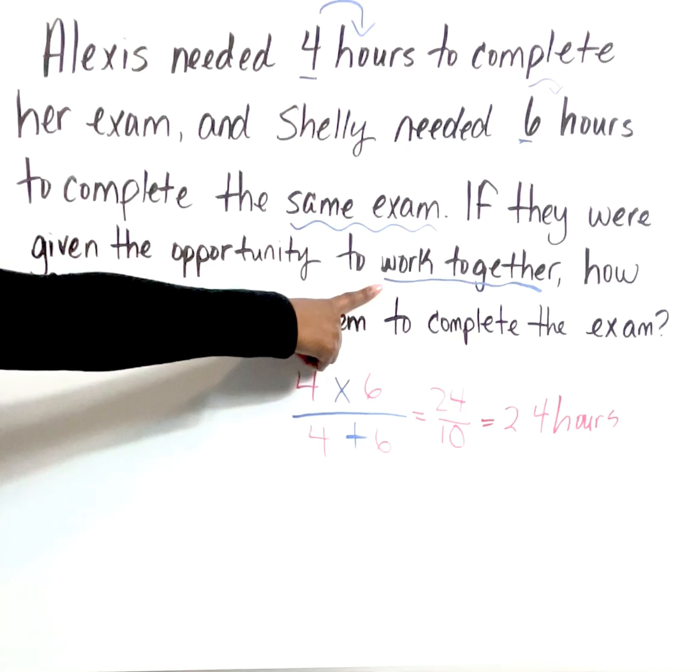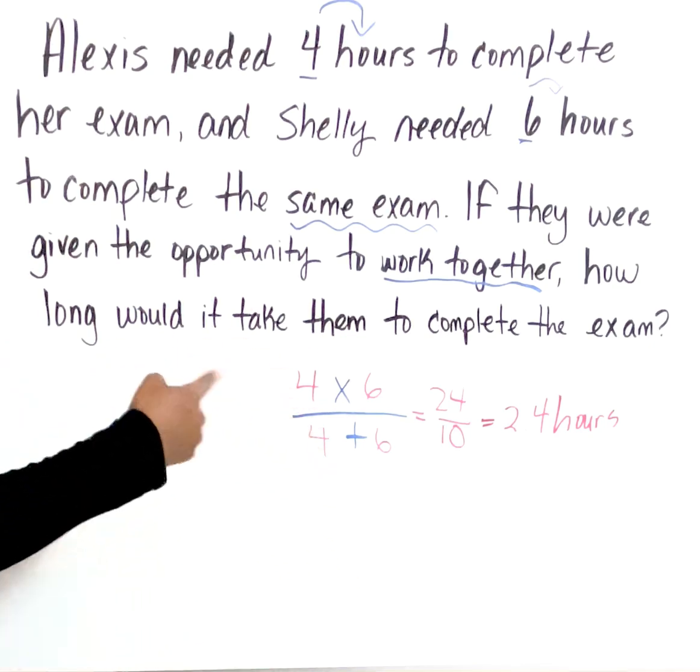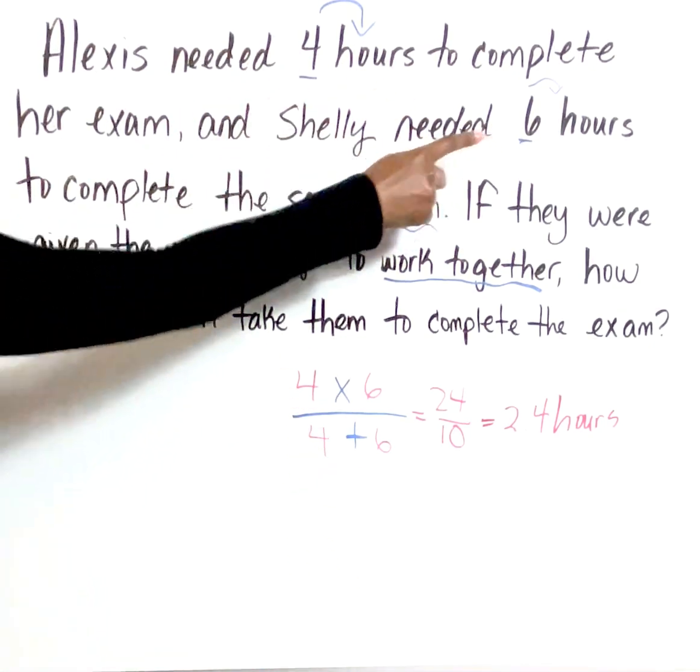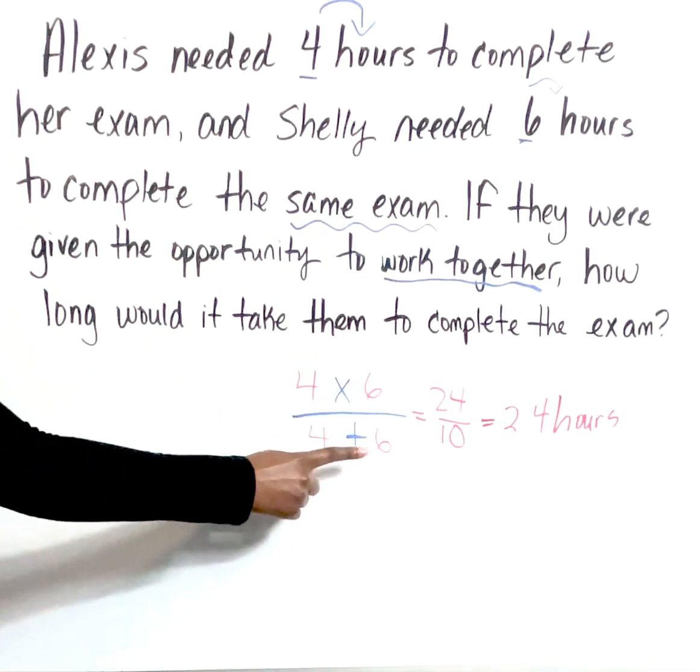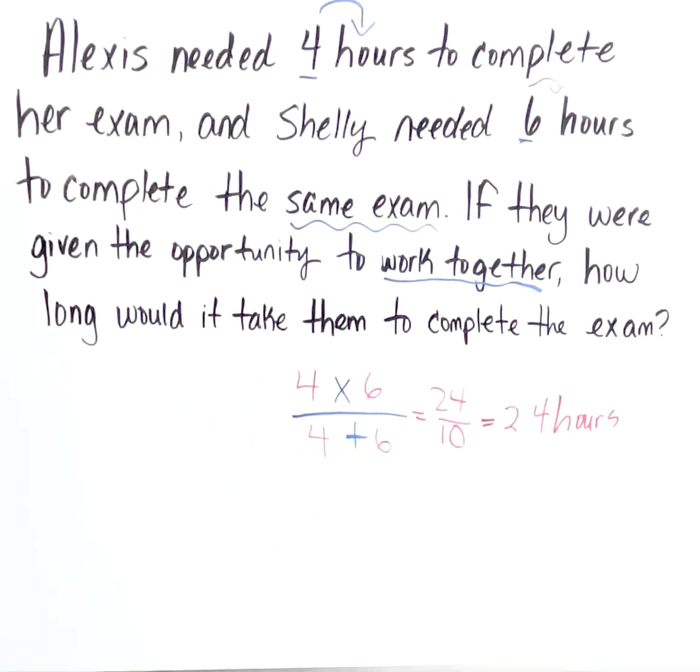Once we know we're trying to figure out how long it'll take them working together, I know I'm dealing with a rate of work question. How long does it take them? Alexis is four hours, Shelly is six hours. We draw a fraction, multiplication sign on top, addition sign on the bottom, fill in the values, simplify, and we get 2.4 hours.